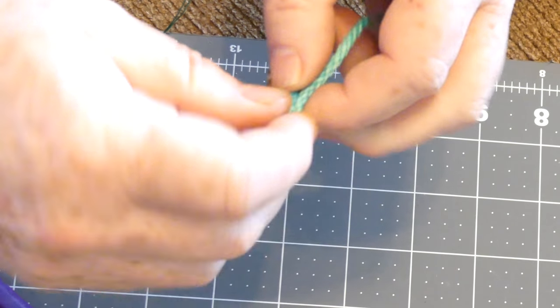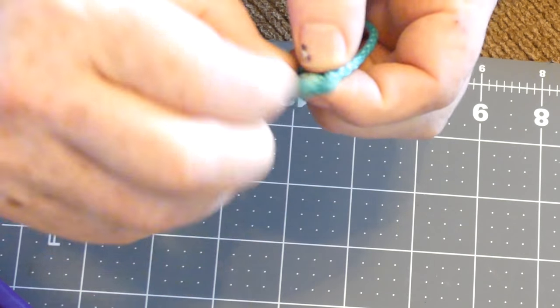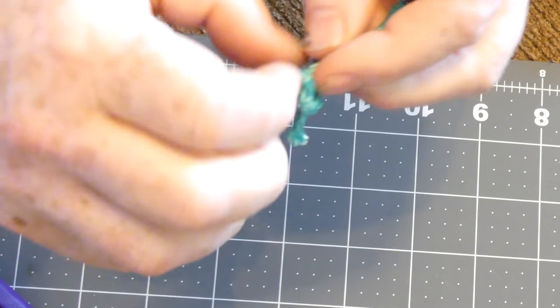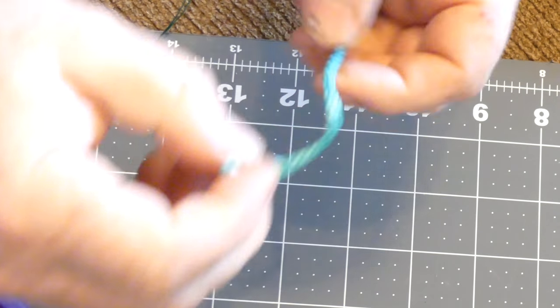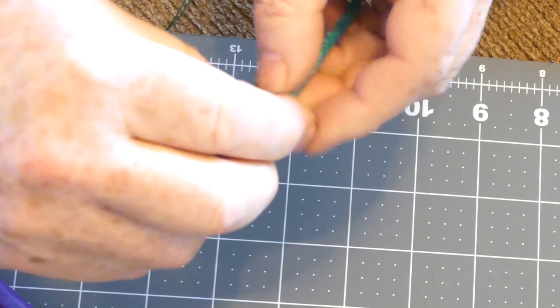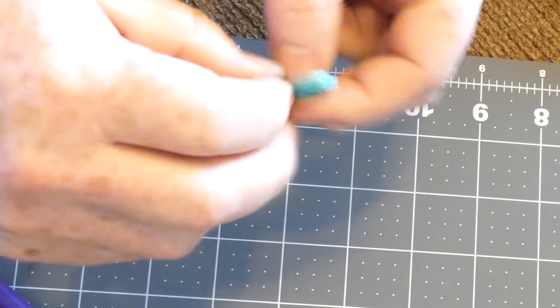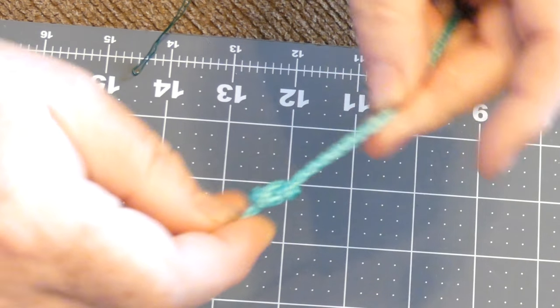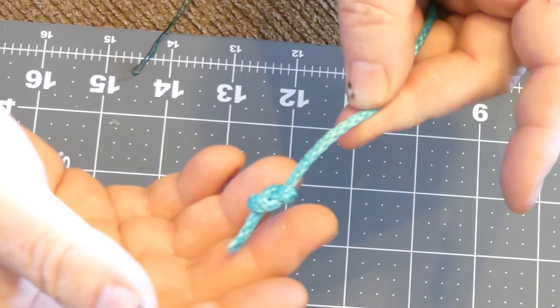So definitely one way you can fix that is just to do a simple knot. You'll use that with soft shackles. If you're a sailor, of course, you do a figure eight.